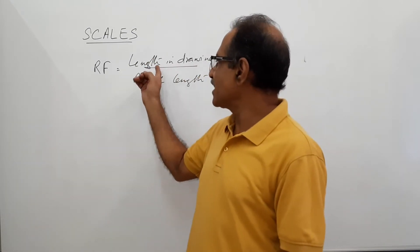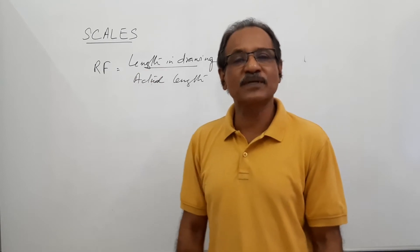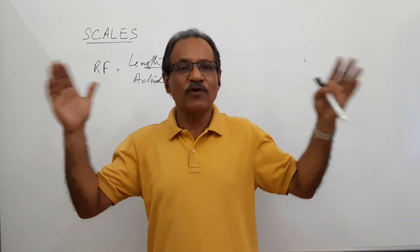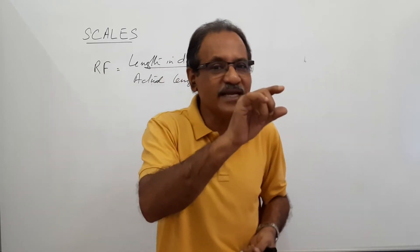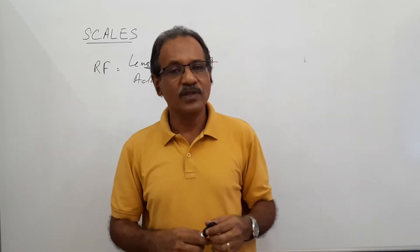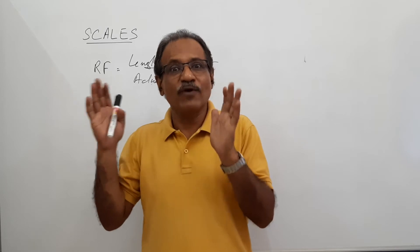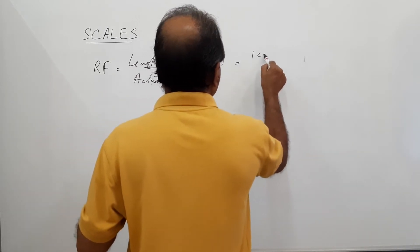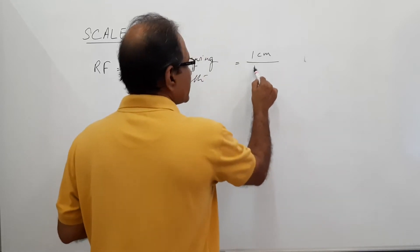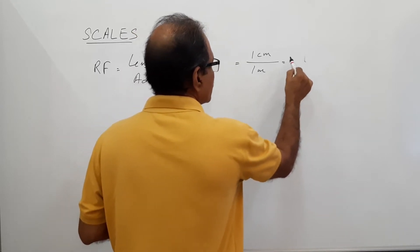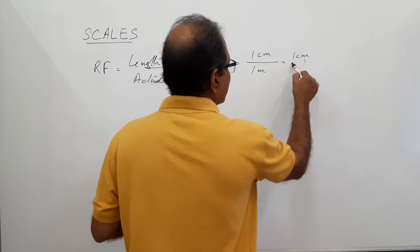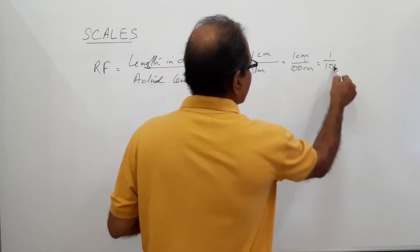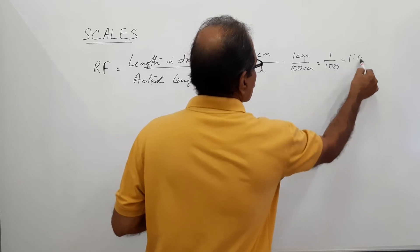If you draw an actual length of 1 meter as 1 centimeter in a drawing, the length in the drawing is 1 centimeter and the actual length is 1 meter. That is 1 centimeter divided by 100 centimeters equals 1 by 100, equals 1 is to 100. This is a reducing scale.